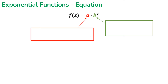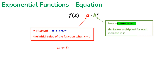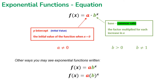The last type of function we're looking at is the exponential function. The formula is f(x) = a · bˣ, where a is the initial value — also the y-intercept when x is zero — and a cannot equal zero. The b is the common ratio, the factor multiplied for each unit increase in x. b must be greater than zero and cannot equal one. You may see the formula written with or without a multiplication symbol, or with b in parentheses.